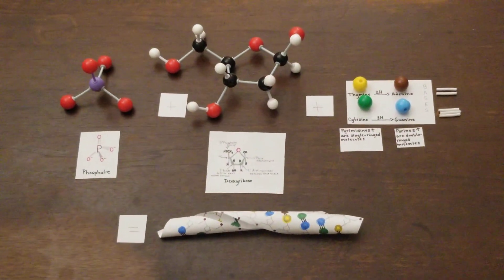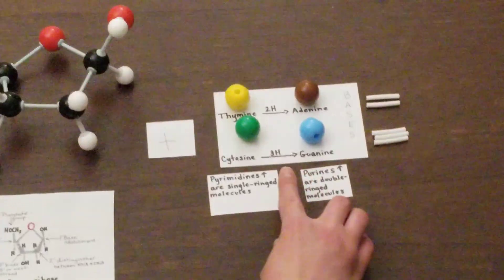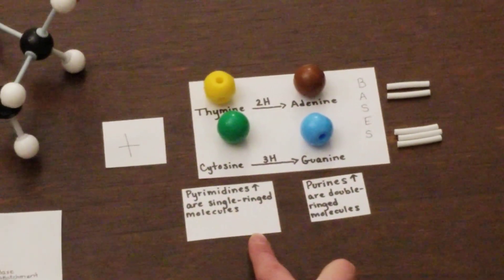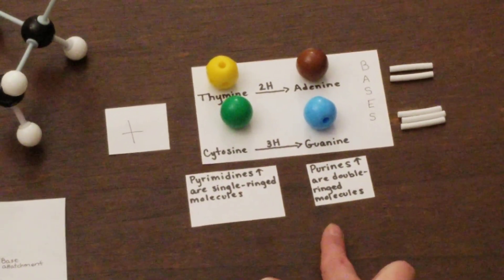The bases at each complementary nucleotide are either single-ringed pyrimidines, thymine and cytosine, or purines, adenine and guanine, which are double-ringed.